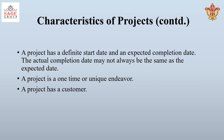Continuing with the characteristics of projects: a project has a definite start date and an expected completion date. There is a certain amount of uncertainty in the duration of the project — we are not 100% sure a project will complete on a given time and date, and the actual completion date may not always match the expected date. The next characteristic is that a project is a one-time or unique endeavor.